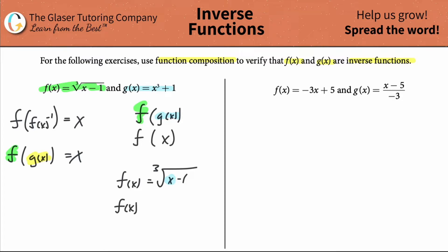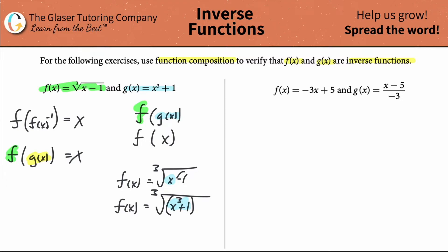So now f of x is equal to the cube root of x cubed plus one — this whole thing in blue — minus one. I already have the cube in there. And then what you have is minus one. All I did was take this piece and plug it in for x. So that's what I have there, and then it's just minus one.